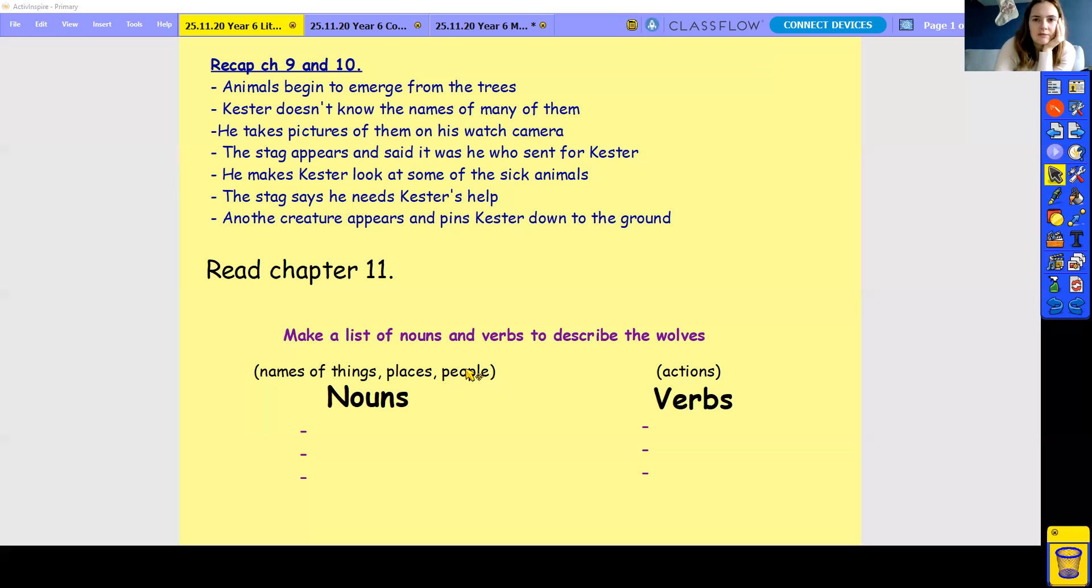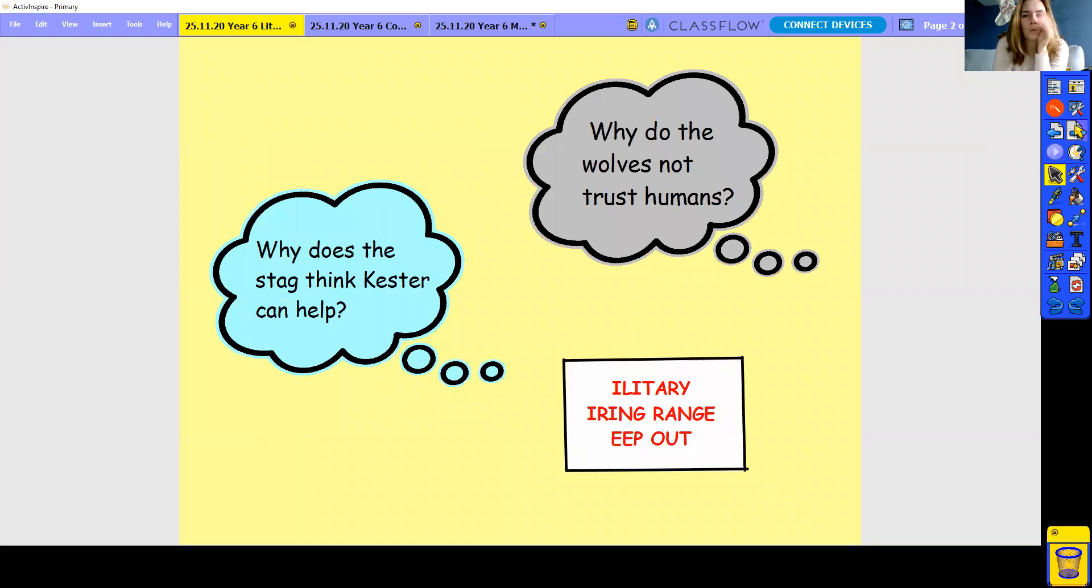Okay, so we've done that little bit there. Make sure you finish these and you've done your nouns and your verbs, which I will have a look at at the end of the lesson. Okay, let's look at the next part. So why do the wolves not trust humans? So why don't the wolves trust humans and why does the stag think Kester can help? So talk to your, I was going to say talk to your partner, write down your piece of paper and we'll check in a second.